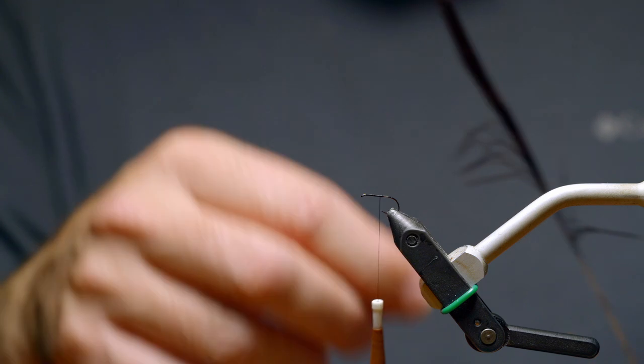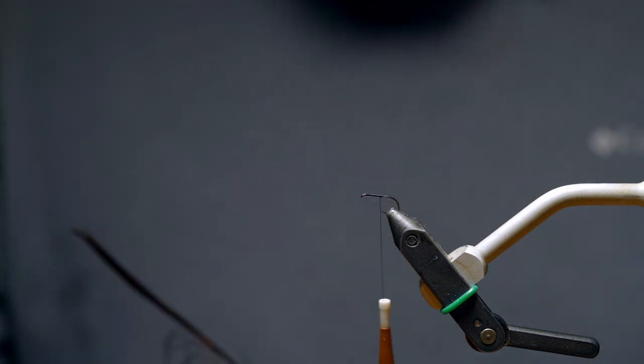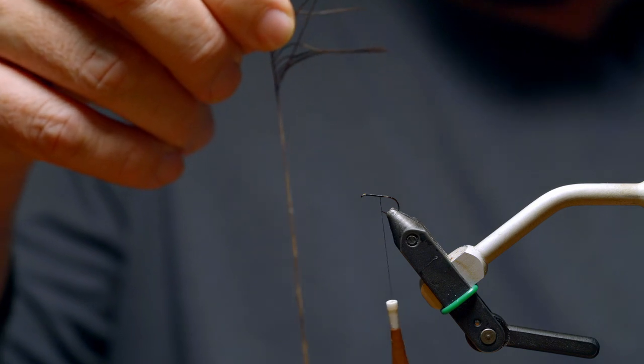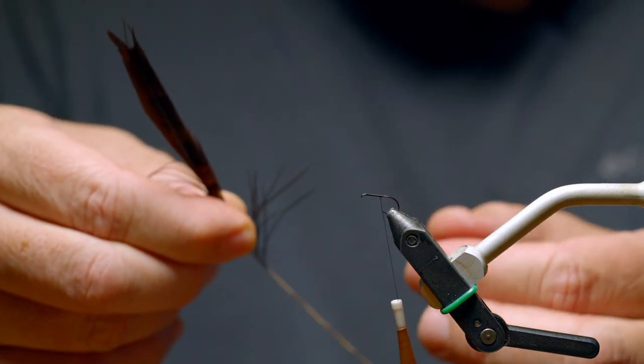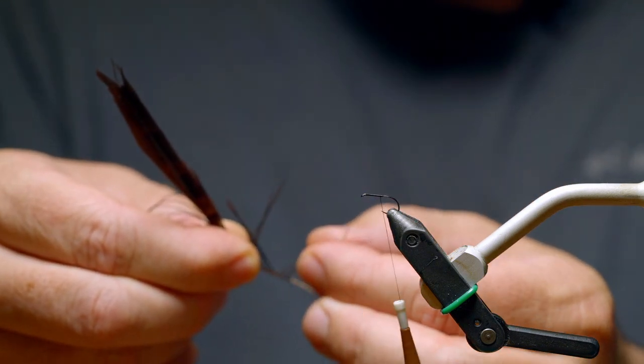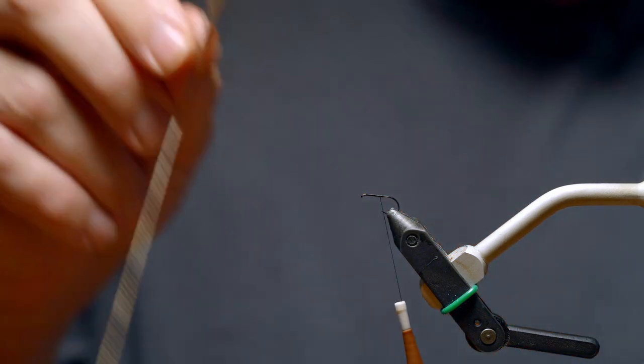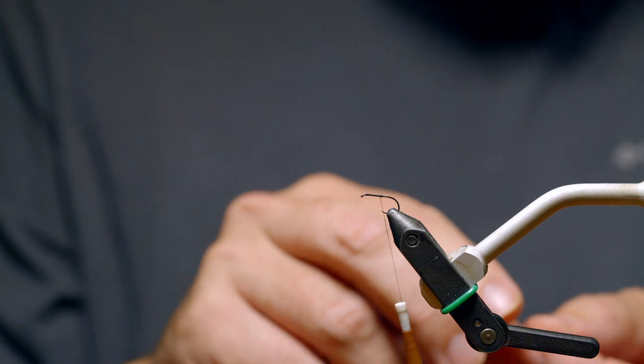What we're going to do is use that to wrap up the hook, and then we're just going to put a plume on the top. It's not too difficult a pattern to material. Grab about three or four strands max. I'm going to grab four. You definitely don't need more than that.